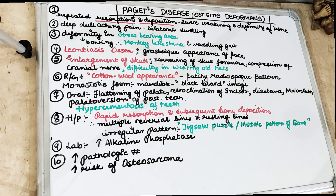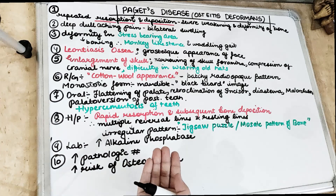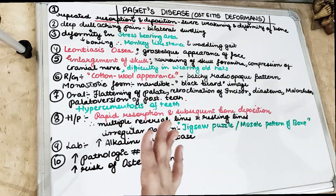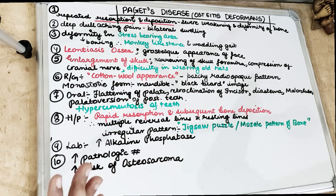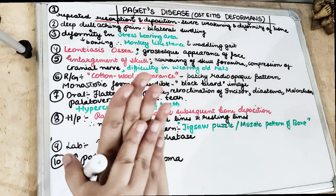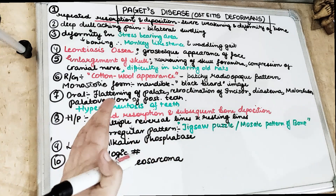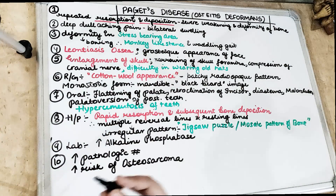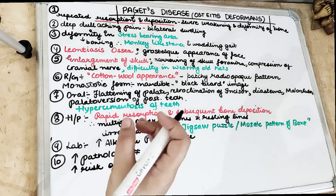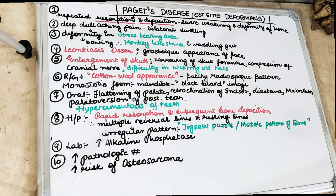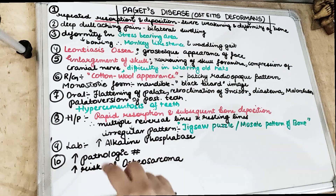In stress-bearing areas like the spine and pelvis, deformity of the bone takes place. The weight-bearing areas of the body develop a bow-like deformity due to the pressure of body weight, so the bones are not straight but bow-like. This produces a typically described monkey-like stance. Because of the significant body weight on the legs, the legs bend and patients are seen with a waddling gait — they cannot walk properly and have a kind of limping.